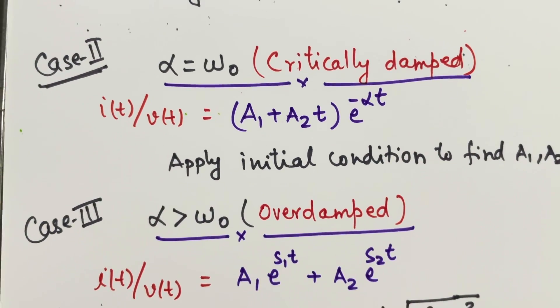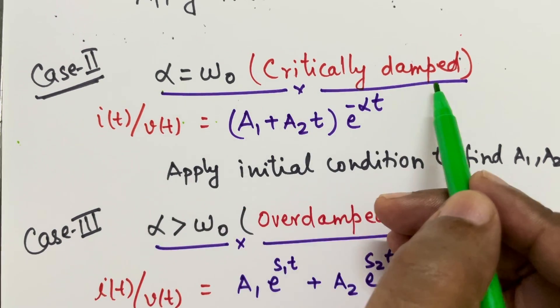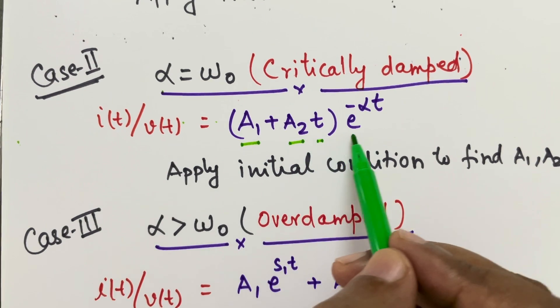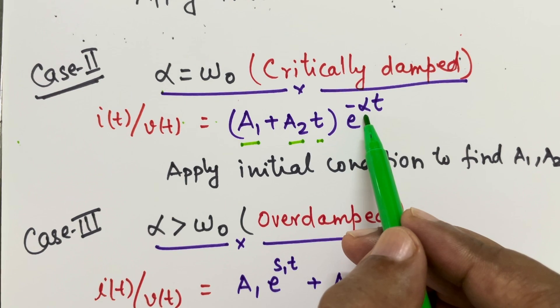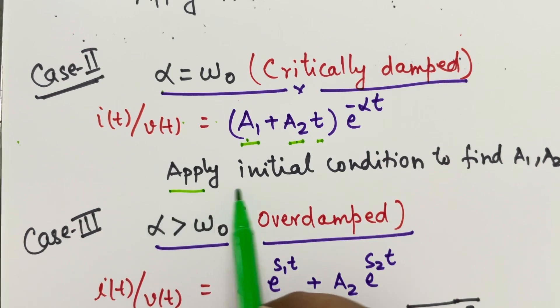For the case 2, we have critically damped when alpha and omega naught both are same. It is critically damped and solution is A1 plus A2 T into e to the power minus alpha T. Again alpha is already known, we have to calculate for A1 and A2. So same way we will apply the initial condition for finding A1 and A2.